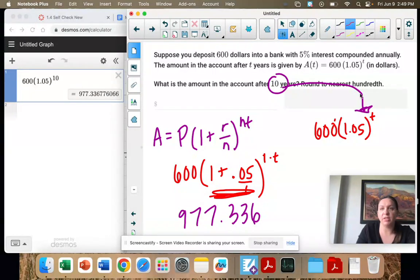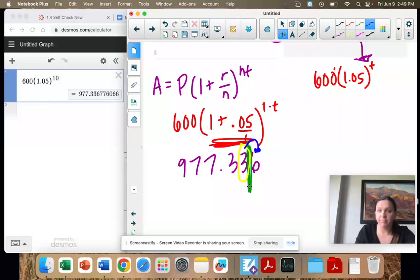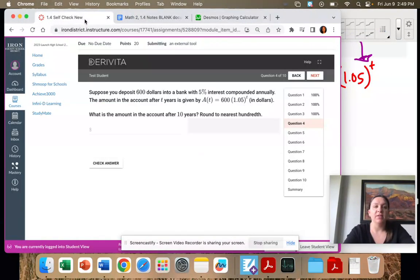We're rounding to the nearest hundredth because that's cents, right? So we only want two decimal places. The only one that will change is this one, and we look next door. Is that number greater than 5? Yes. So that changes to a 4. So 977.34.